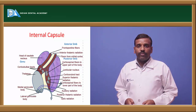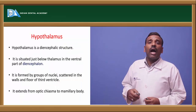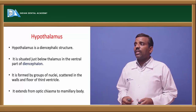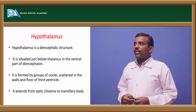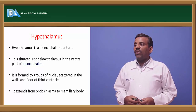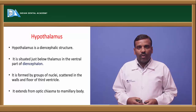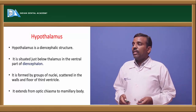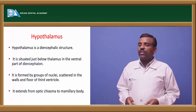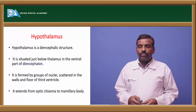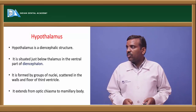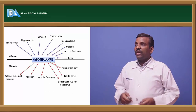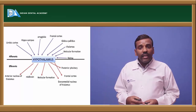The hypothalamus is a diencephalic structure situated just below the thalamus in the ventral part of the diencephalon. It is formed by groups of nuclei scattered in the walls of the third ventricle. It extends from the optic chiasma to the mammillary bodies. Afferent connections come from the limbic cortex, hippocampus, amygdala, frontal cortex, globus pallidus, thalamus, reticular formation, and retina.